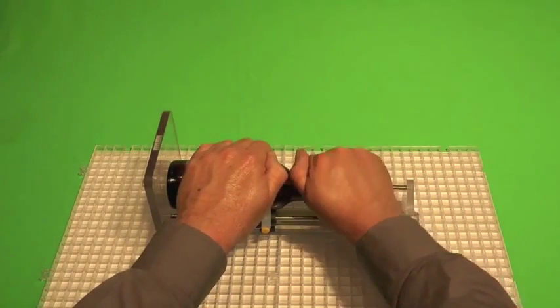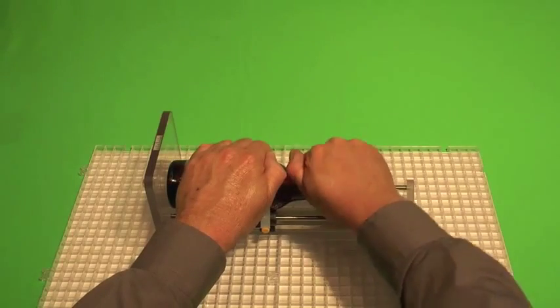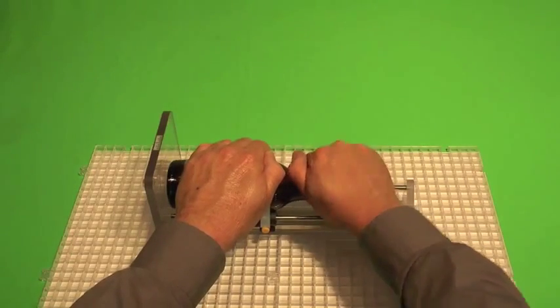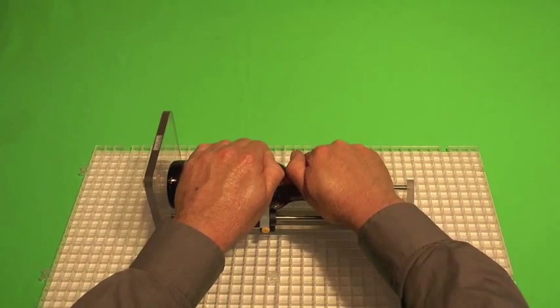It doesn't matter how hard you press down with your palm because that's not what's making the score. The cutting head is making the score because it's at a perfect four pounds of pressure.